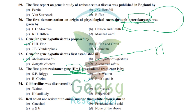Gibberellins were first discovered by Kurosawa. Red onions are resistant to onion smudge disease (caused by Colletotrichum circinans) compared to white onions because red onions contain two phenolic compounds: catechol and protocatechuic acid. White onions lack these phenolic compounds and are highly susceptible. The symptom of onion smudge disease is black discoloration on the bulb.